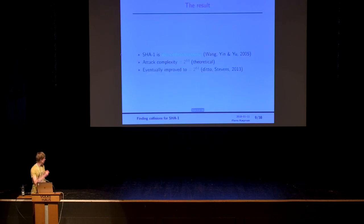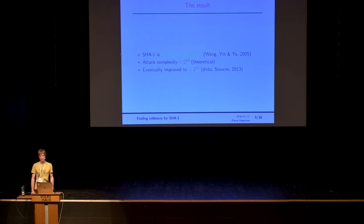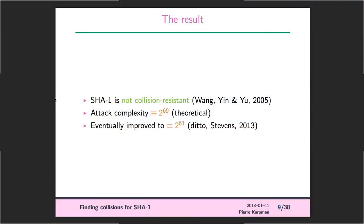If you've attended a crypto talk in the past decade, you may have seen this picture — it's the structure of the Wang-type attack from 2005 by Wang, Yin, and Yu. That attack at Crypto 2005 had theoretical complexity equivalent to 2 to the 69 computations of SHA-1. This was eventually improved, and in 2013 Stevens proposed another theoretical attack with complexity 2 to the 61.